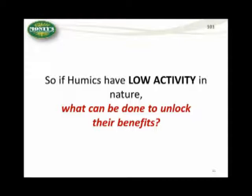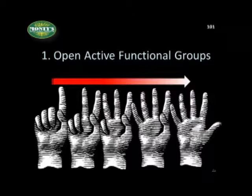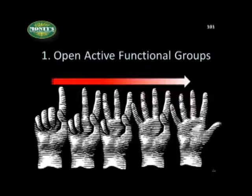So if these humics have low activity in nature and they're bound up, what can be done to unlock their benefits? The first thing we want to do is open up the functional groups. Using the hand analogy — going from left to right — what we do in our processing technology is we begin to open up those functional groups, so those fingers begin to open from one to two to three to four to five, until we have a fully active material — active biologically, geologically, and chemically.